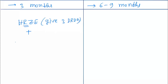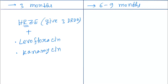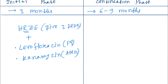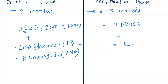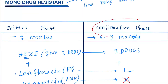In the initial phase of monodrug resistant TB, we give three drugs from H, R, Z, E plus levofloxacin (a fluoroquinolone) and kanamycin (an aminoglycoside). In the continuation phase, three drugs from H, R, Z, E plus levofloxacin are continued, but kanamycin is absent.